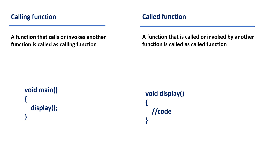In this example, we have two functions: the main function and the display function. The main function is calling the display function. So main function becomes the calling function because it is calling display function, and display function is called the called function.